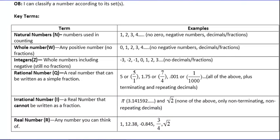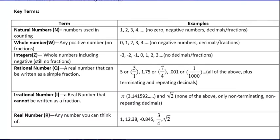Here are all the different number sets. We have natural numbers, which are numbers that are used in counting. If I asked you to count to 5, most likely you would start with 1 and go 1, 2, 3, 4, 5. So there's no 0, no negative numbers, no decimals or fractions.